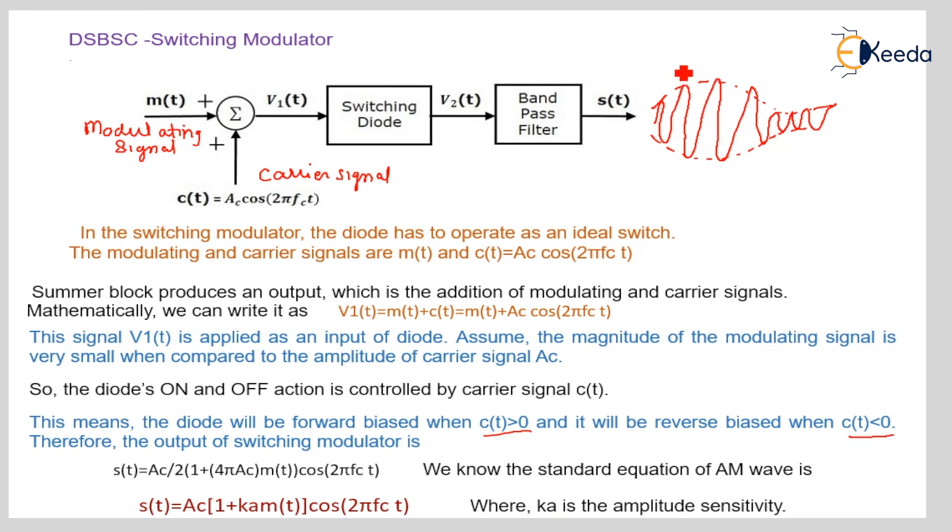So at the output you will get the double sideband suppressed carrier. Here phase shift again it is showing 180 degrees phase shift. Thank you for watching.